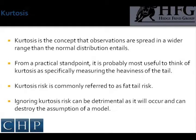From a practical standpoint, it is most useful to think of kurtosis as specifically measuring the heaviness of the tails — the extent to which the distribution of the variable falls off relatively slowly near the extremes. Kurtosis risk applies to any kurtosis-related quantitative model that relies on normal distribution for certain independent variables, especially when it veers substantially from the normal distribution. Kurtosis is commonly referred to as fat tails. A fat tail metaphor explicitly describes the situation of having more distributions at either extreme than the tails would suggest — therefore the tails are fatter. Ignoring kurtosis can be a detriment, as it will occur and destroy the assumptions of a model.